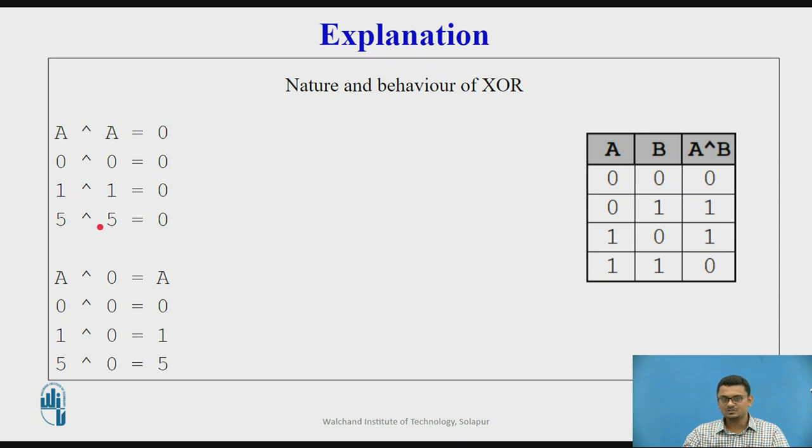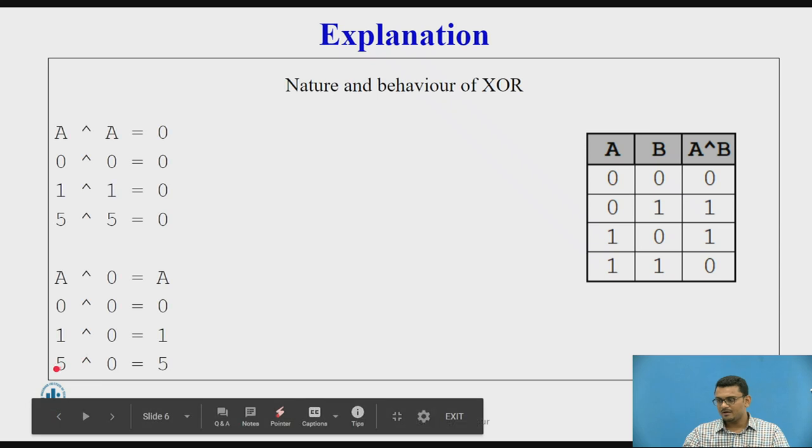If I operate 5 XOR 5, the result will be 0. Similarly, if I operate XOR operation and either of the operator is 0, the result will be the other input. A XOR 0 will return A, or 5 XOR 0 will return 5.